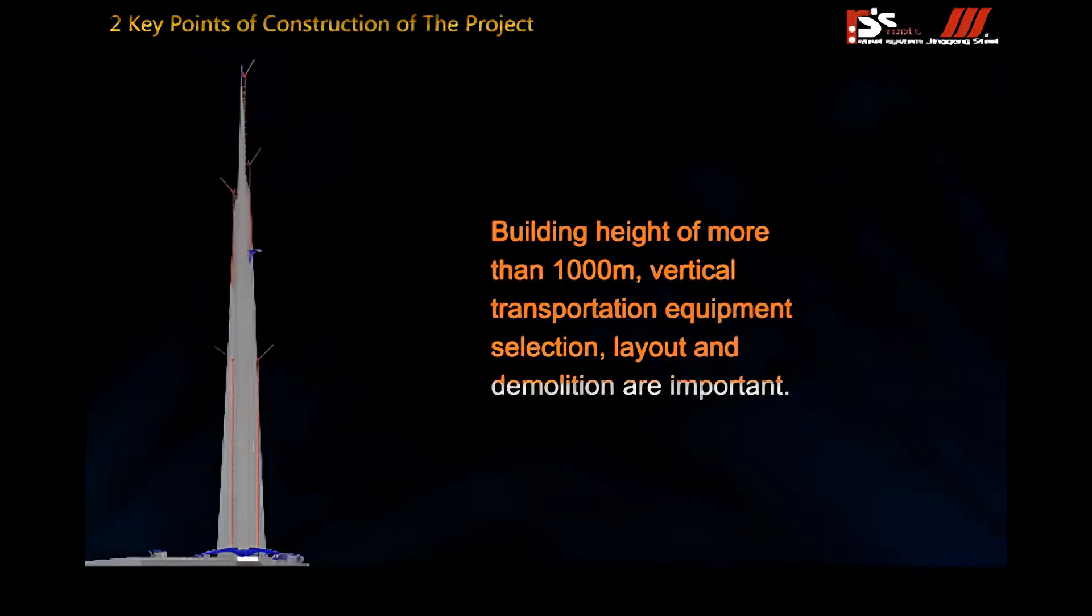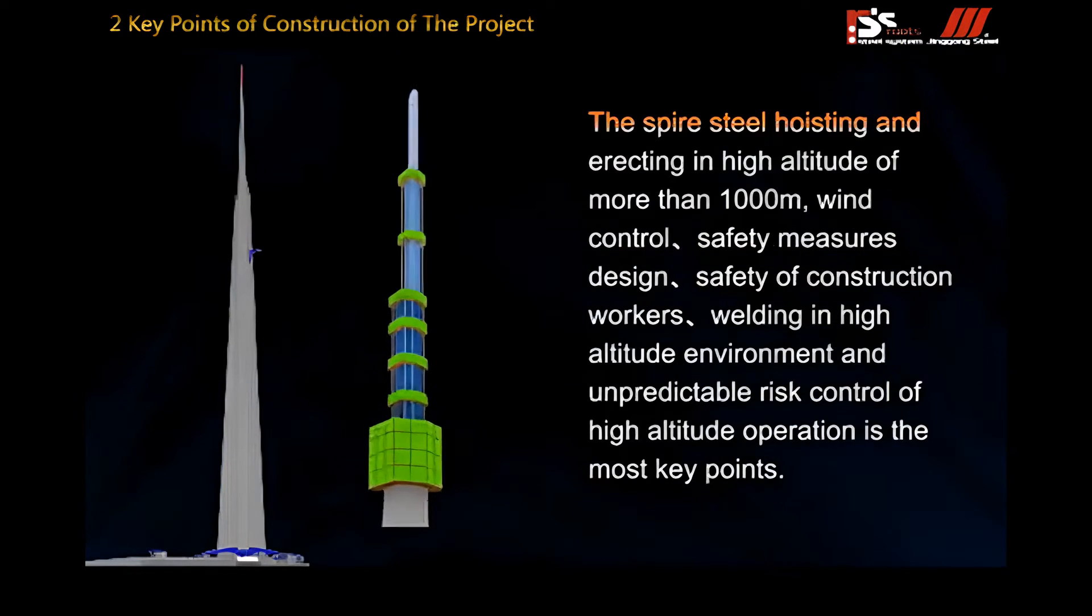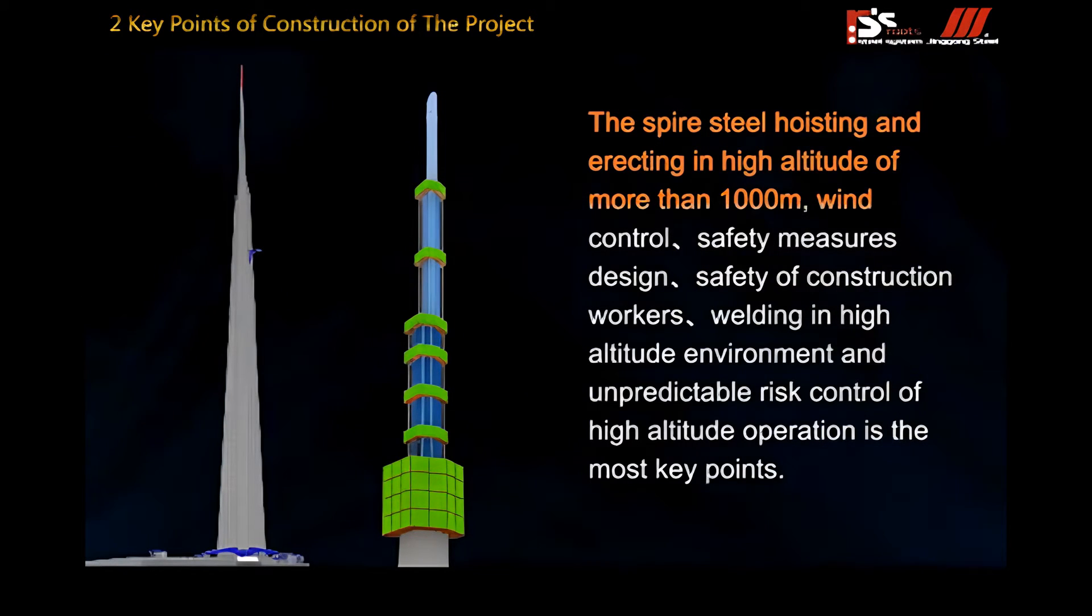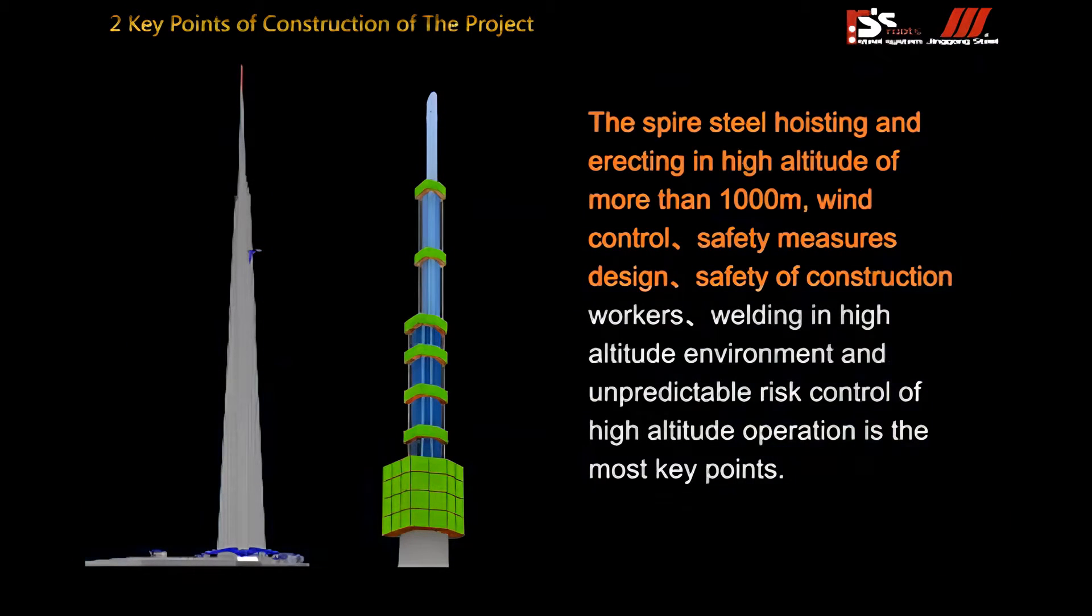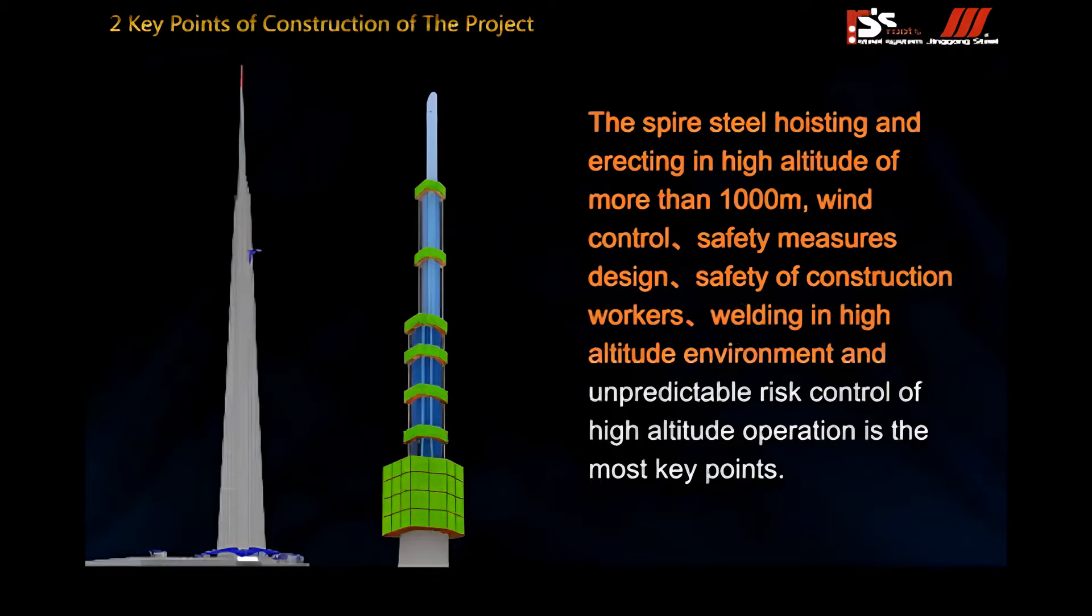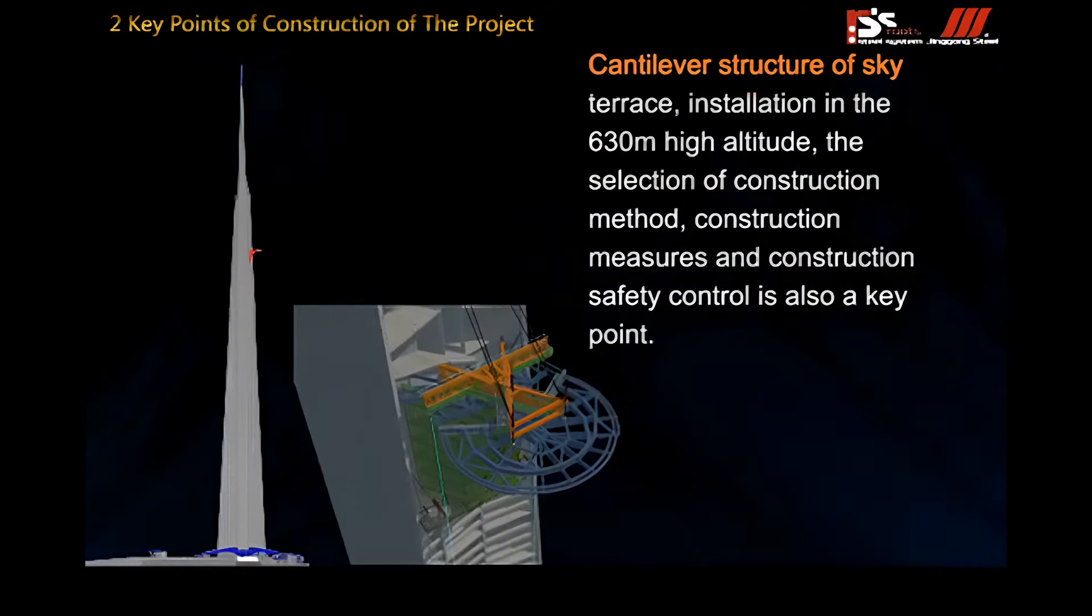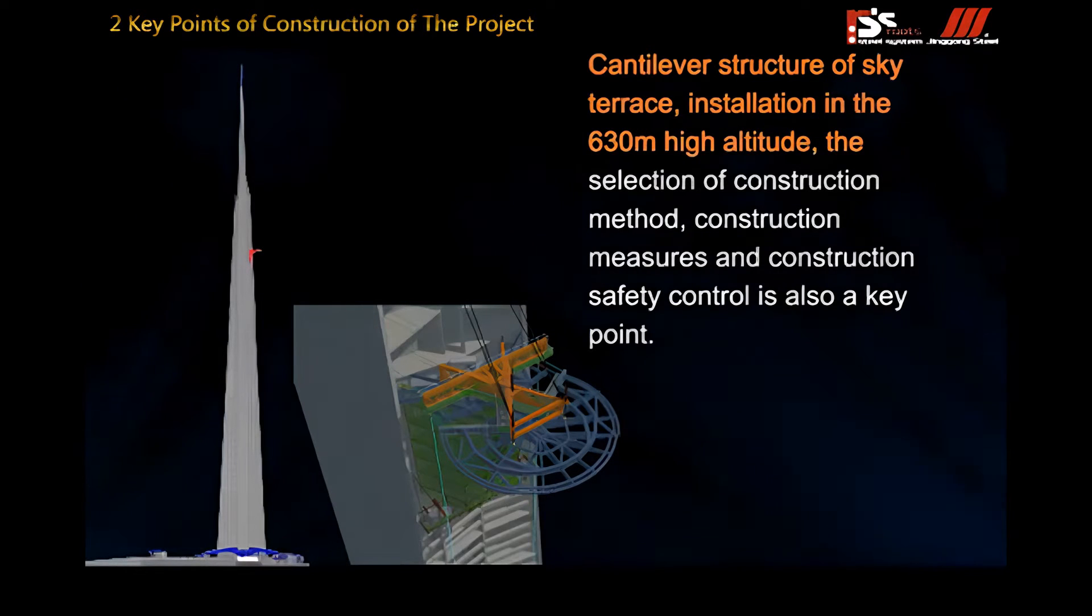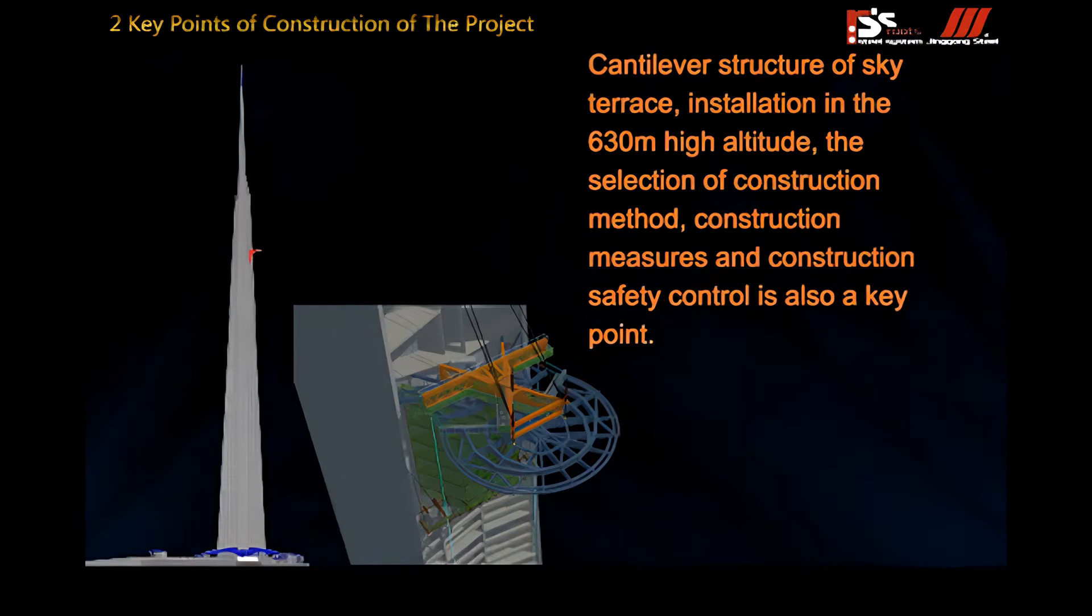The spire steel hoisting and erecting at high altitude of more than 1,000 meters, wind control, safety measures design, safety of construction workers, welding in high altitude environment and unpredictable risk control are the most key points. Cantilever structure of sky terrace installation at 630 meters high altitude, the selection of construction method, construction measures and safety control are also key points.